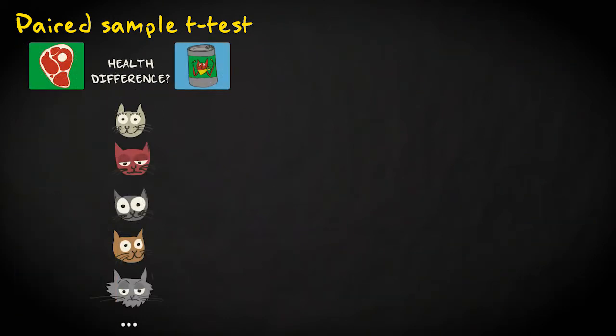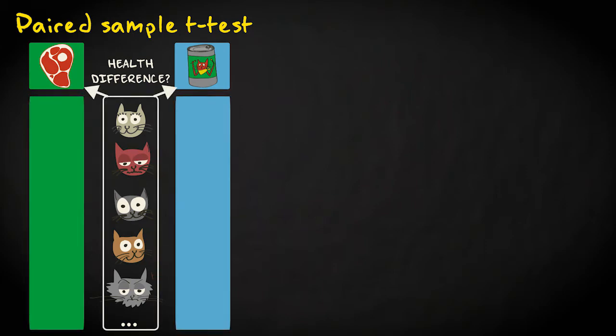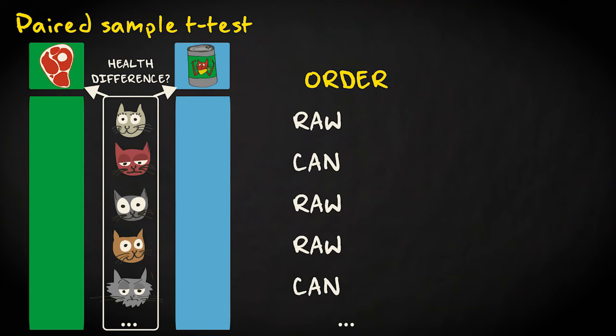Suppose I want to test whether a raw meat diet is healthier for cats than regular canned food. Instead of comparing two separate groups of cats exposed to different diets, I can expose one group of cats to both diets. I randomly assign half of the sample to a raw meat diet for two months and the other half to a canned food diet. Cat health is measured on a scale between 0 and 10 by a veterinarian based on lab results.